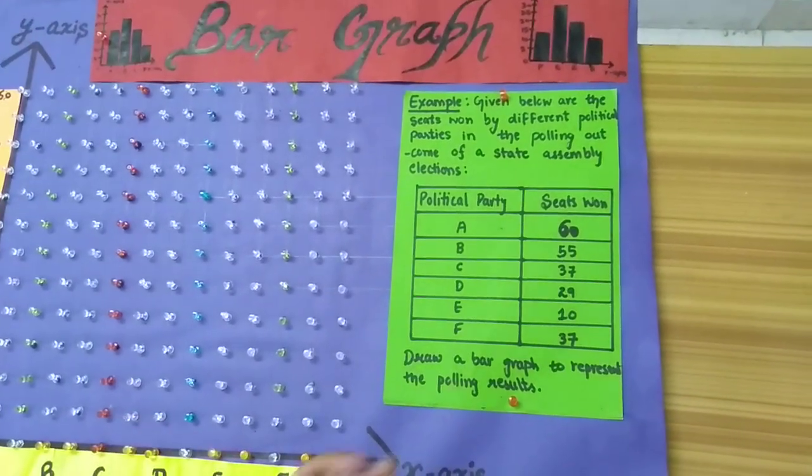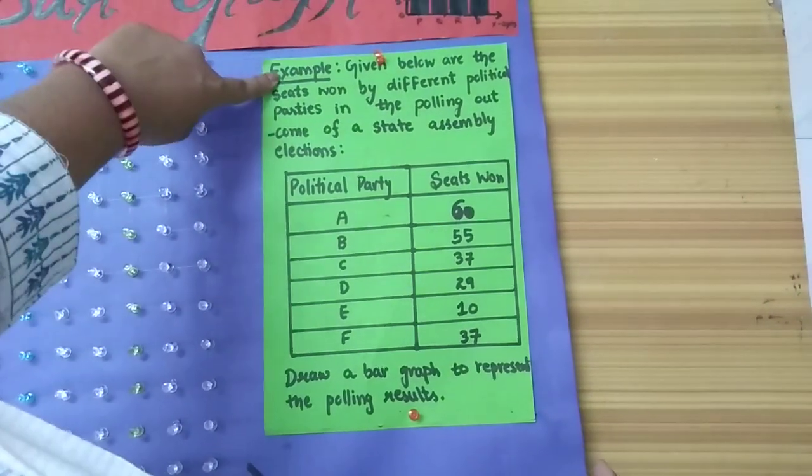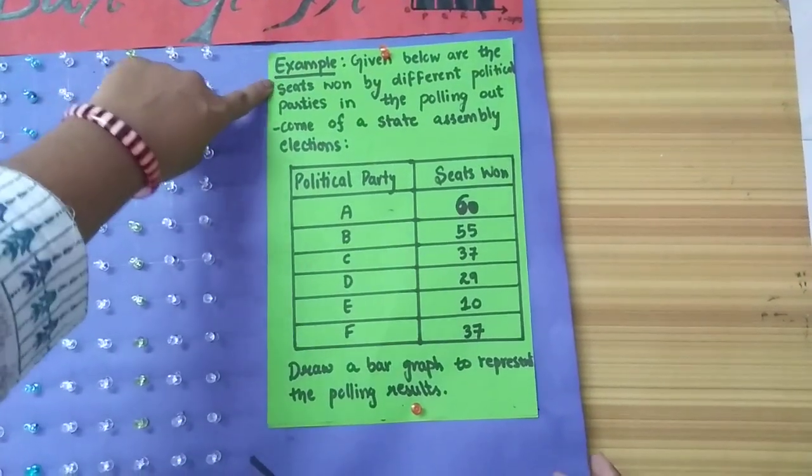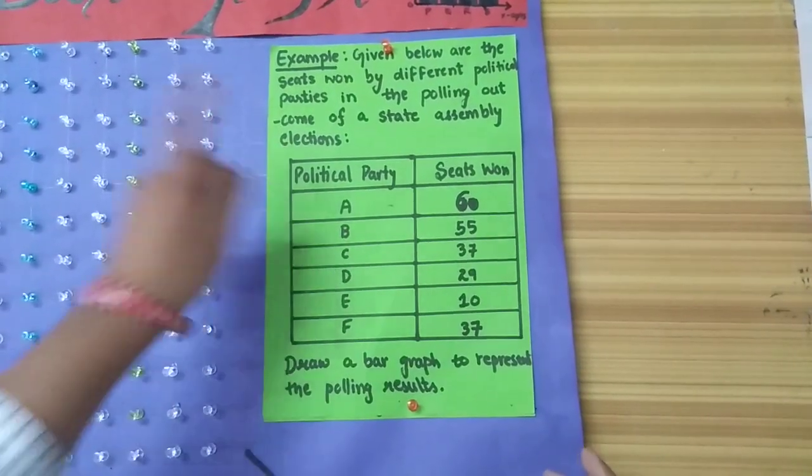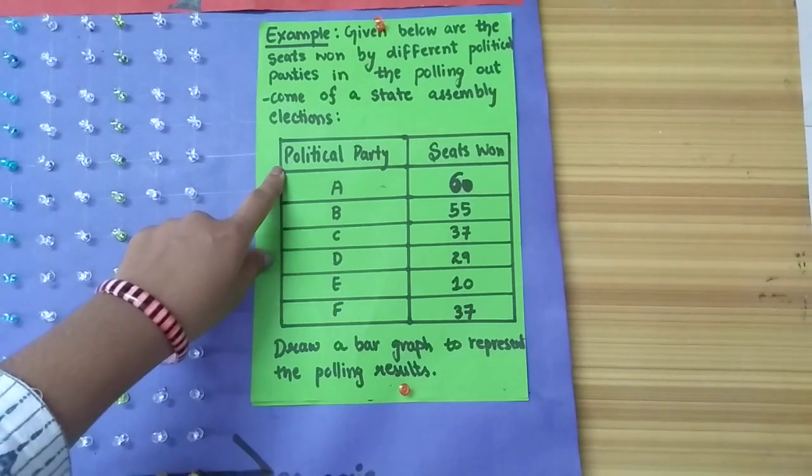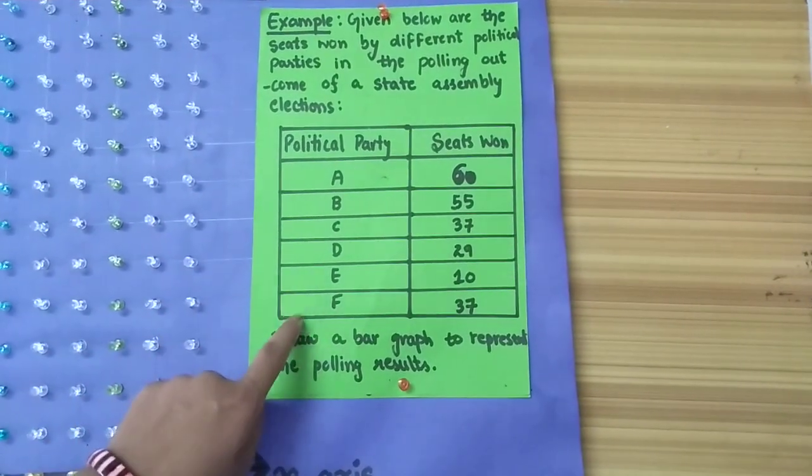First of all, here is my question for my bar graph. In this question I have seats of different political parties and their own outcomes. Here I have parties, political parties A, B, C, D, E, and F.